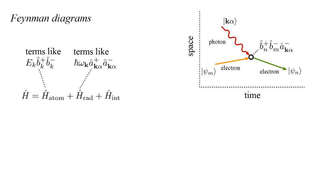The quantum jump is described by the product b-hat n-plus b-hat m-minus a-hat k-alpha-minus. This destroys the photon, destroys the m-th orbital electron, and creates the n-th orbital electron. We conclude that the interaction Hamiltonian must contain terms like this to describe the absorption of a photon by the atom.